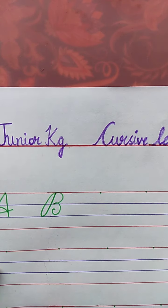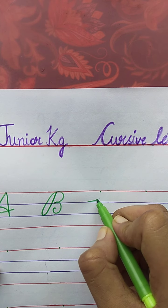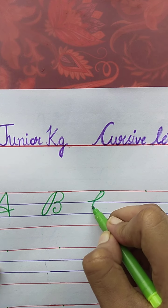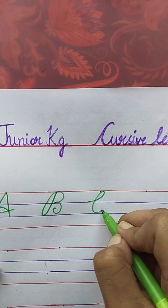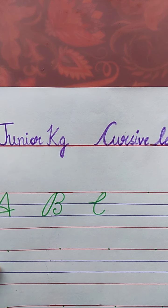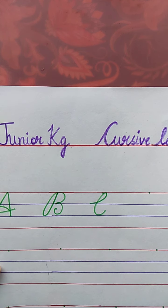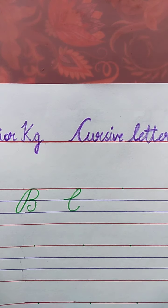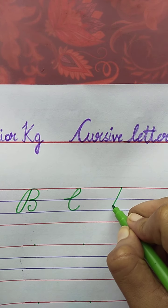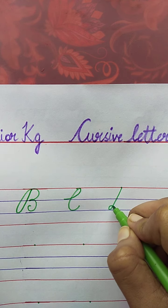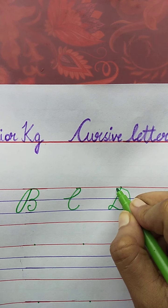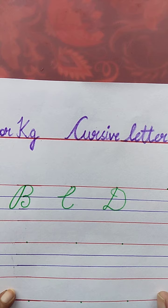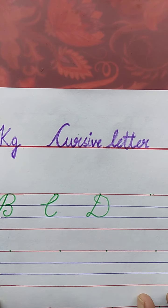Now, tell me the next letter. C. Very good. C for Cat. The spelling of Cat is C-A-T. Cat. Now, the next letter is D. D for Duck. The spelling of Duck is D-U-C-K. Duck.